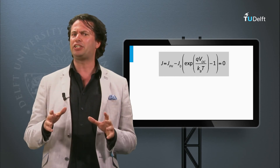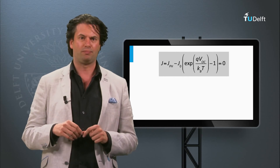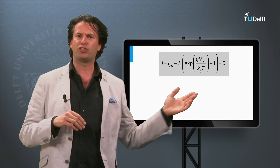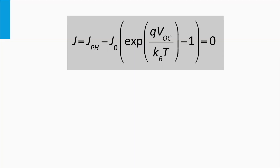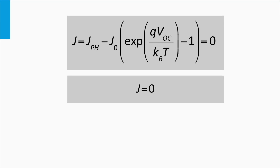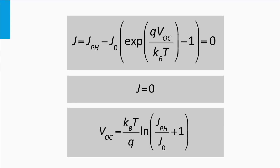We can derive a simple equation for the open circuit voltage of an ideal solar cell. In the previous block we derived a simple equation for the current density, which had two components: the photocurrent generated by the light-excited charge carriers, and the typical JV characteristic of a diode in the dark. Under open circuit conditions the current density J is equal to zero. Solving this equation gives a simple expression for the open circuit voltage: it is linear with the Boltzmann constant times the temperature divided by the charge of an electron, and linear with the natural logarithm of the ratio between the photocurrent and the leakage current of the diode, plus one.